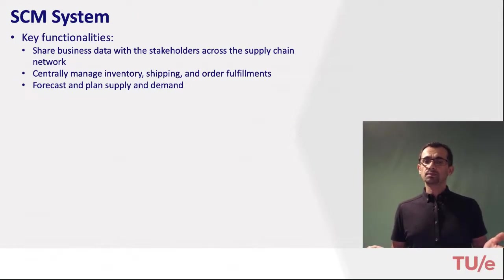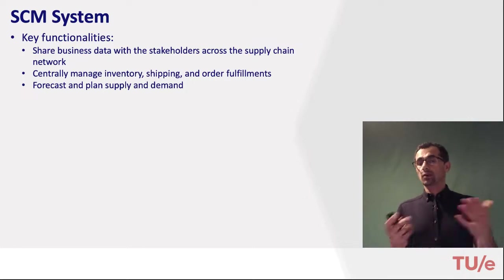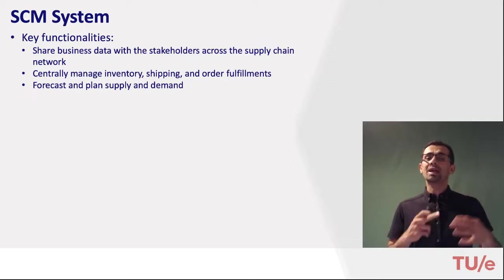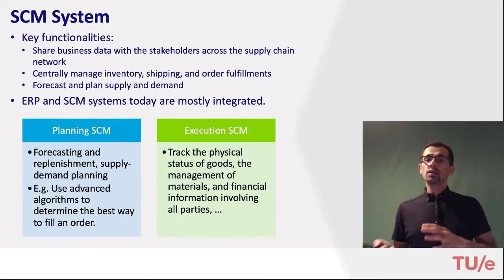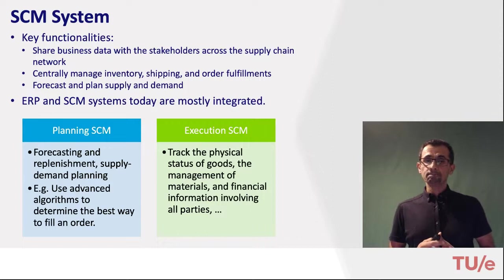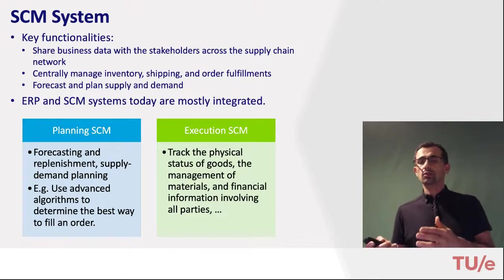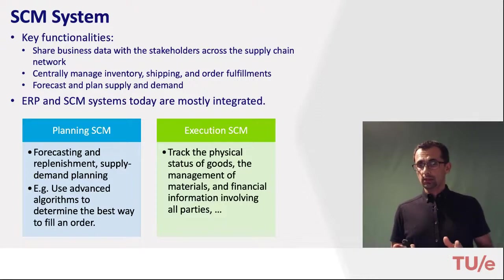Key functionalities of supply chain management systems include: enabling sharing of business data with stakeholders across the supply chain network, which is perhaps the most important feature; allowing central management of inventory, shipping, and order fulfillment; and allowing forecasting and planning of supply and demand across the entire chain. ERP and supply chain management systems today are mostly integrated. There are two main sub-components: planning, which helps with forecasting, replenishment, and supply-demand planning; and execution, which tracks the physical status of goods, management of materials, and financial information involving all parties in the chain.